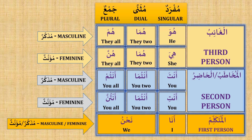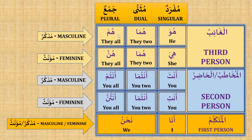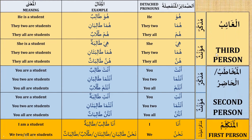These pronouns must be memorized. If you think that this way will be difficult to memorize, we have another way to list the pronouns in the same order. The first six rows are third person, the next six rows are second person, and the last two rows are first person.